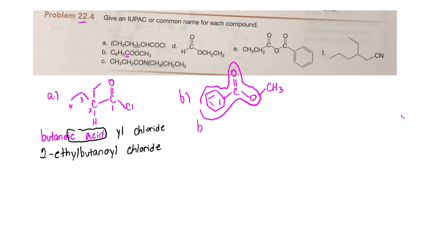And remember what we do to the end when we have esters: we drop off the 'ic acid' and we add 'ate.' Now we have this methyl group here, so this is going to be methyl benzoate.